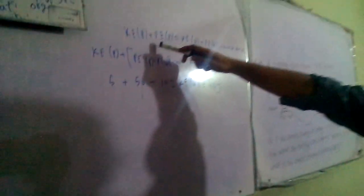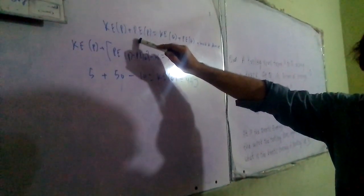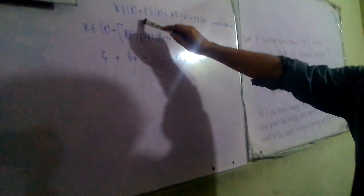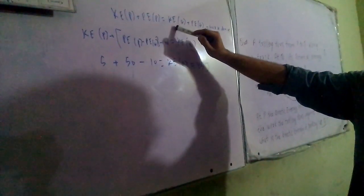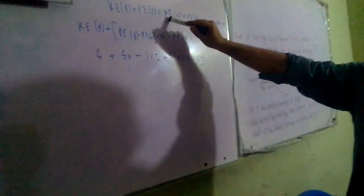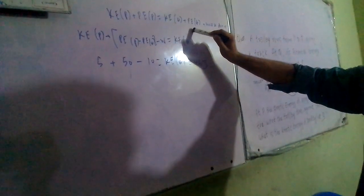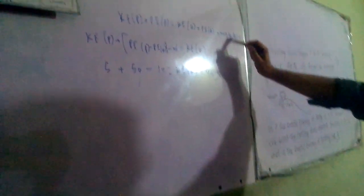So, kinetic energy plus potential energy at P equals kinetic energy at Q plus potential energy at Q plus work done at Q.